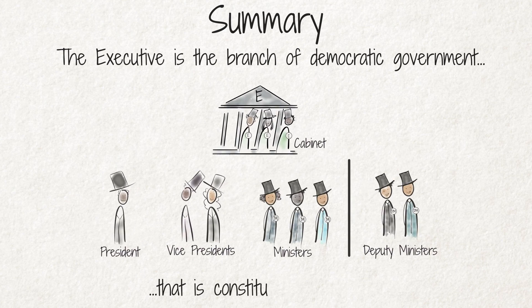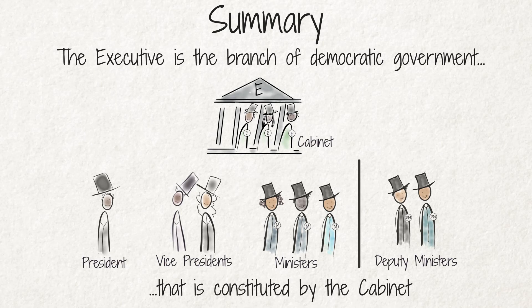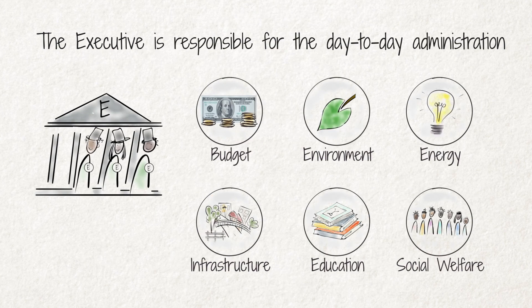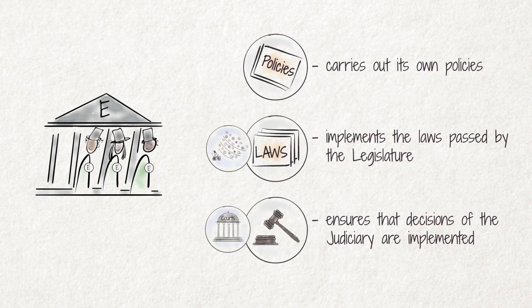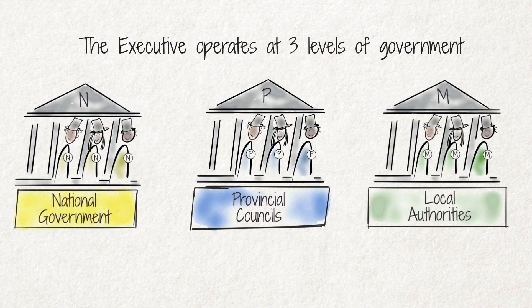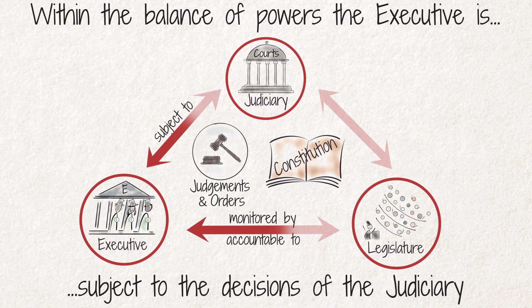Summary: The executive is the branch of democratic government constituted by the cabinet — the president, vice presidents, ministers, and deputy ministers. This branch is responsible for the day-to-day administration and carrying out of national legislation and policies through the work of its departments. The executive operates at three levels of government: the national, provincial, and local levels. All of these levels have executive authority in their own spheres, and within the balance of powers, the executive is accountable to and monitored by the legislature, and is subject to the decisions of the judiciary.